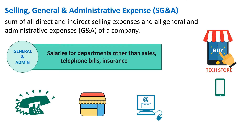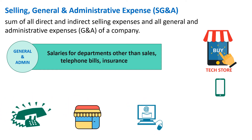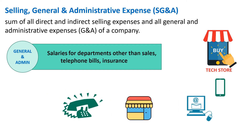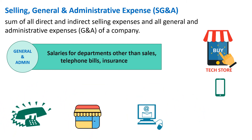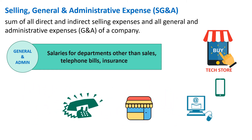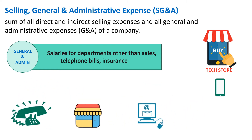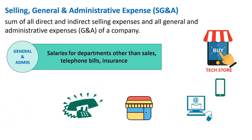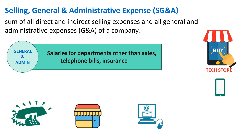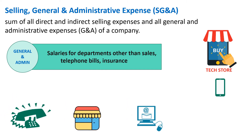Now let's look at the second component: general and admin expense. For the regular functioning of Tech Store, the store might have telephone expenses, rent, and internet expense. All of these expenses may not be related to direct selling of the product, but are equally important to make those sales happen, and therefore all of this put together falls under the general and admin expense.